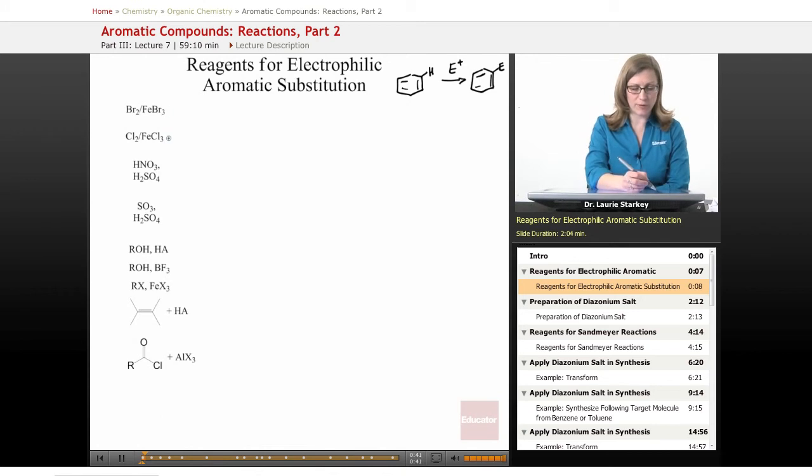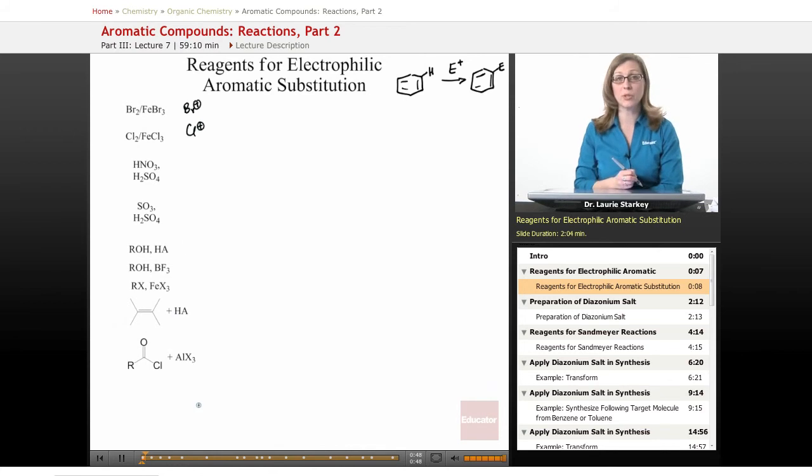If you use Br2FeBr3 or Cl2FeCl3 that would be your way of forming Br plus or Cl plus. So we can brominate or chlorinate a benzene ring this way.